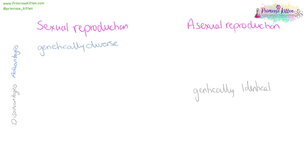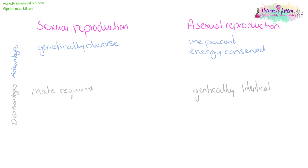An advantage of asexual reproduction is that there is only one parent, meaning that the plant or animal doesn't have to wait around for a mate to turn up. Whereas with sexual reproduction a mate is required, and sometimes this can be quite hard to find, especially in sparsely populated locations. Another advantage of asexual reproduction is that energy is conserved — the parent is putting all of its energy into conserving its own genes, as opposed to putting energy into something that only has half of its genes.